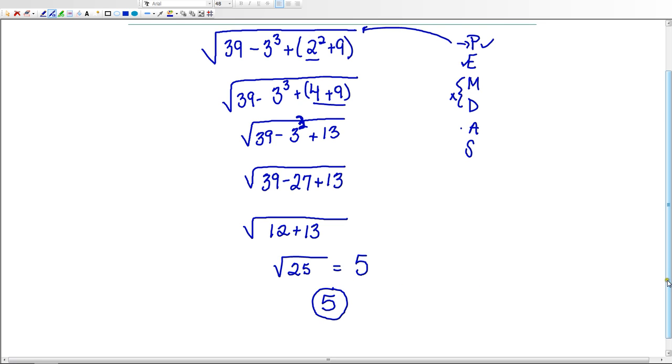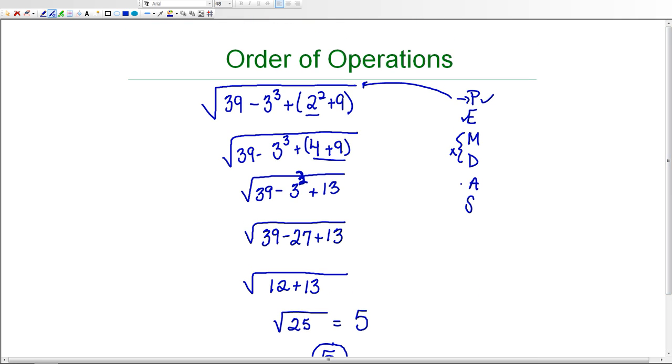And what I want you to fully understand is that the radical symbol is a grouping symbol. And everything underneath of that radical should be evaluated together as if it were in parentheses. And we're going to follow the order of operations underneath the radical just as we would with any expression.